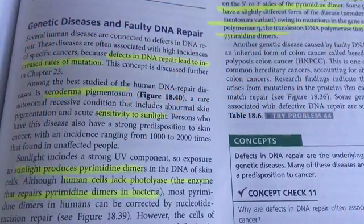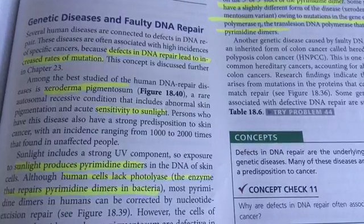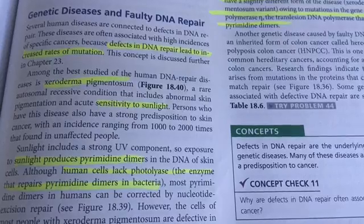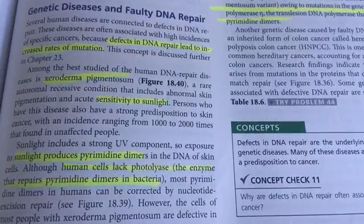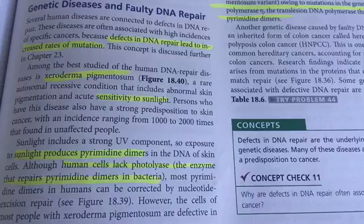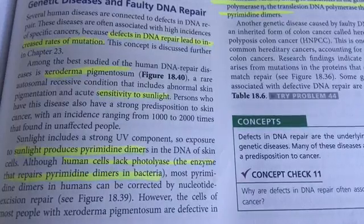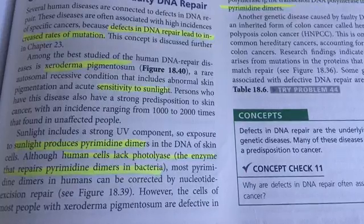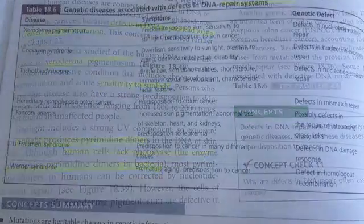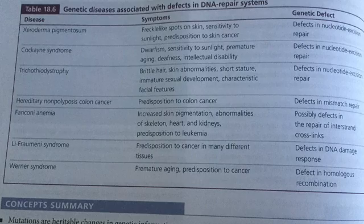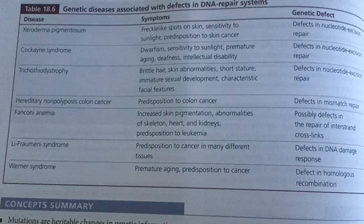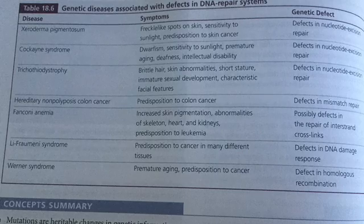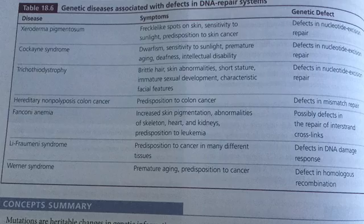There are some genetic diseases associated with defective repair. Many characteristics are affected, and it's often associated with increased incidence of cancer. One disease is xeroderma pigmentosum, where there is abnormal skin pigmentation from sensitivity to sunlight. The defect in repair system does not allow for pyrimidine dimers to be repaired, and results in freckle-like spots on the skin and a predisposition to skin cancer.